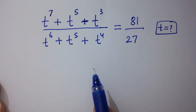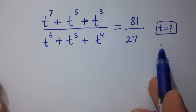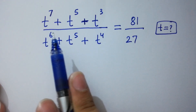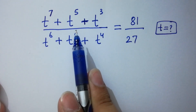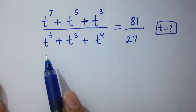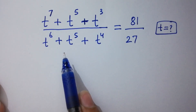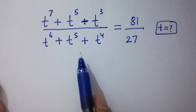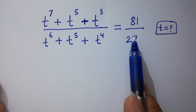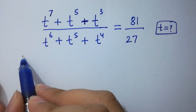Hello friends. Find the value of t if t to the power 7 plus t to the power 5 plus t cubed, over t to the power 6 plus t to the power 5 plus t to the power 4, equals 81 over 27. Let's have a solution.